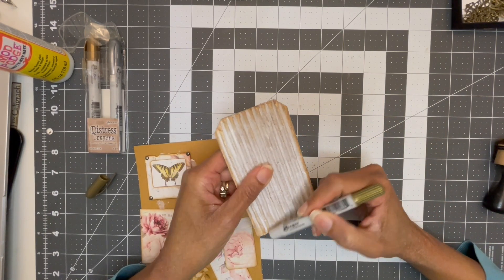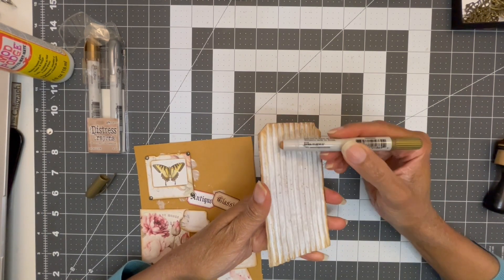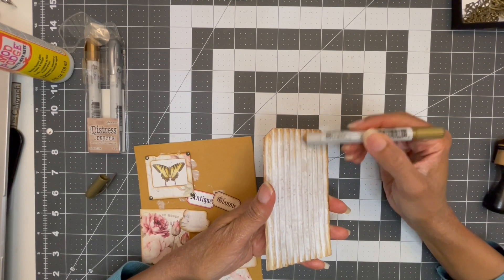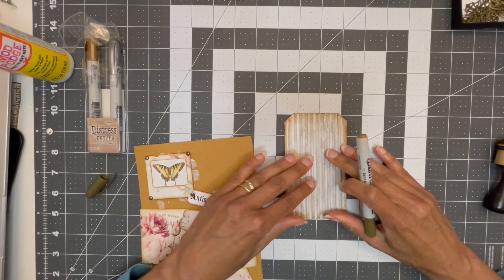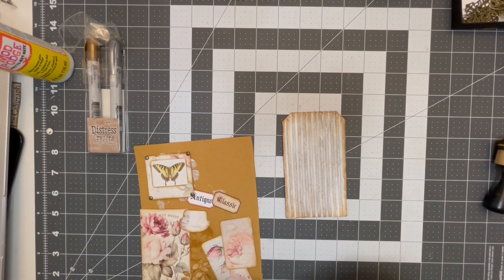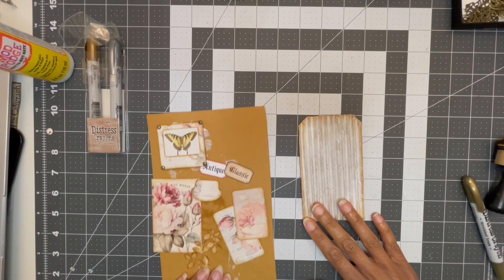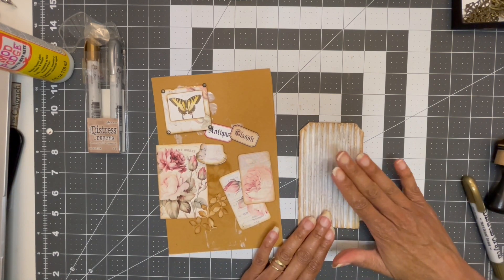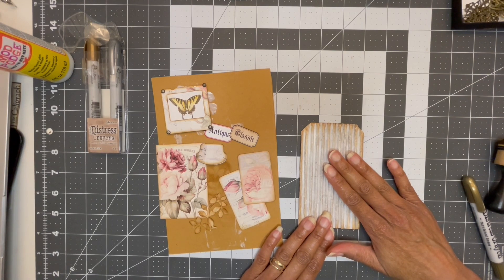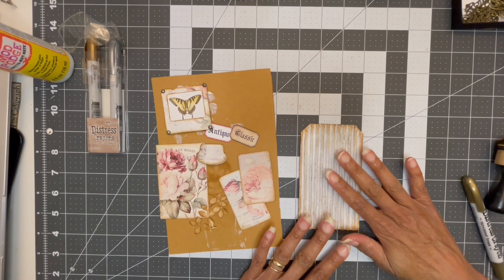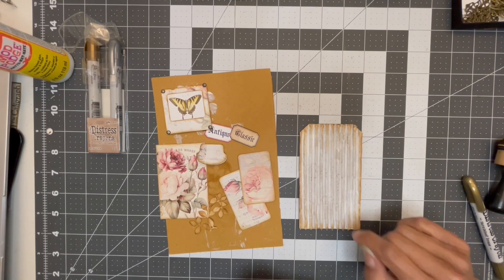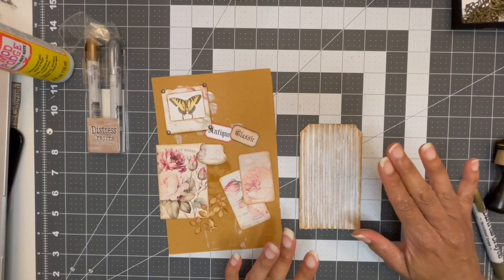Then I used the distressed crayon brass and I just went over the edges where I did the distressing. I put a few streaks here on the corrugated board. Now I have a few things to do some embellishing for the tag, so let me do those things and then we'll be back to wrap it up.